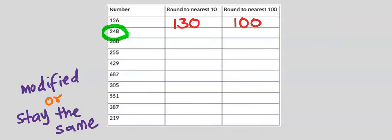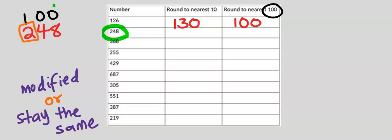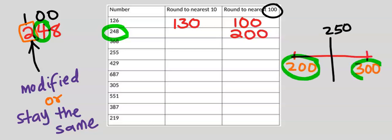Next, consider 248. To the nearest hundred, we use zero, zero, one — we are not concerned about the trailing zeros. We consider four and eight: four is not up to five, hence two will not be modified. The four and the eight become zeros. Because halfway between 200 and 300 is 250, and 248 is somewhere here, which is closer to 200.